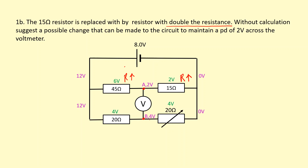If we restore that ratio, the potential difference at point A won't change. Another possible change is to lower the resistance of one of the resistors in the other branch. If we lower that resistance, the voltage across the remaining resistor in that branch goes up, and that way we can maintain a potential difference of two volts between the two points.